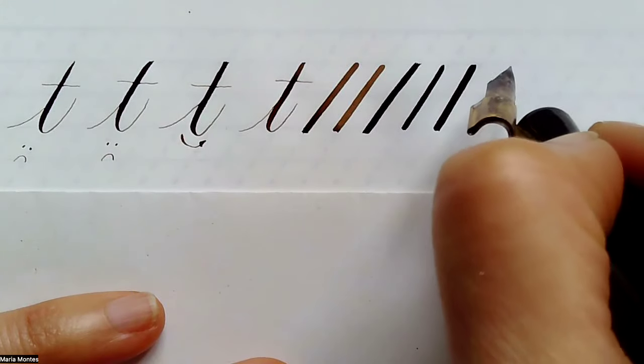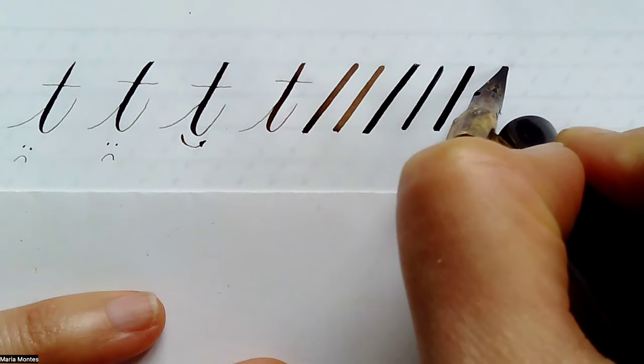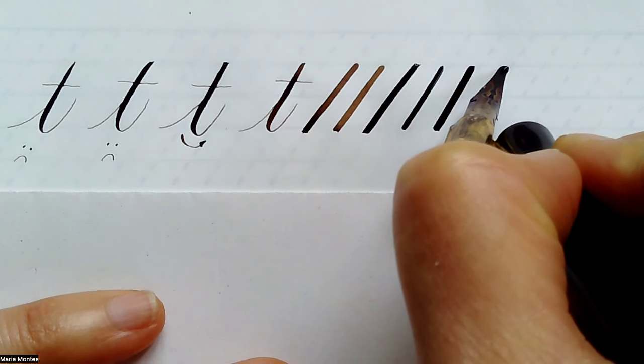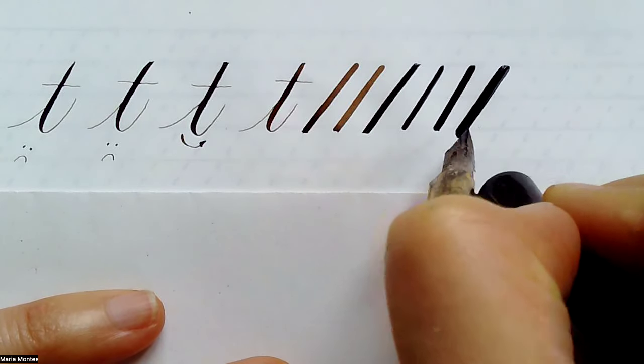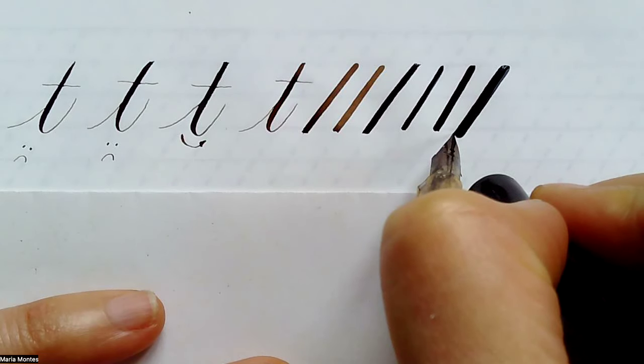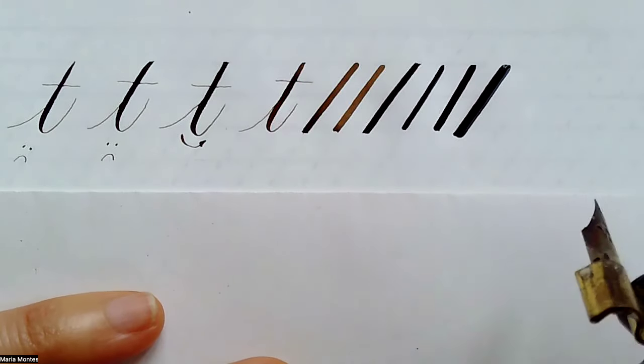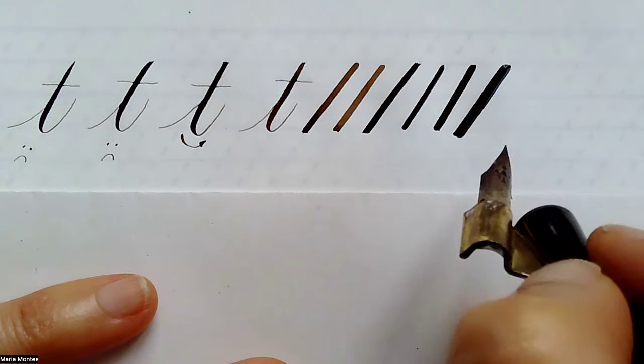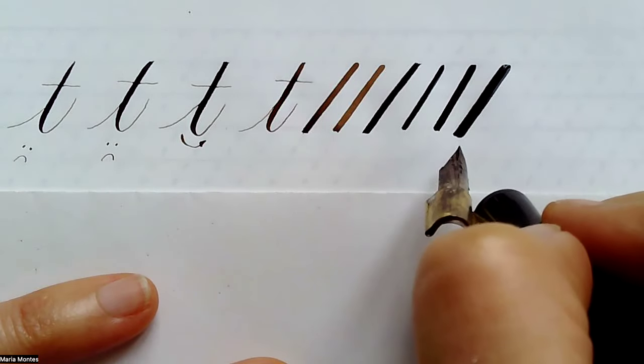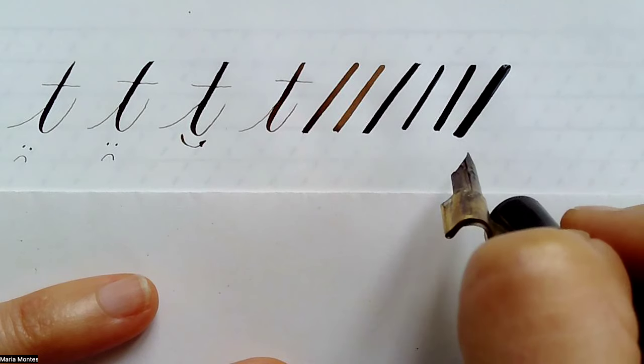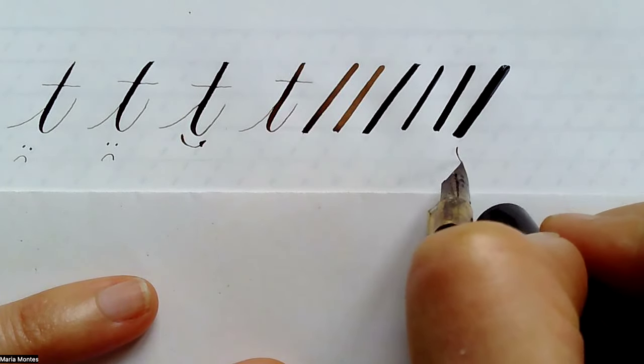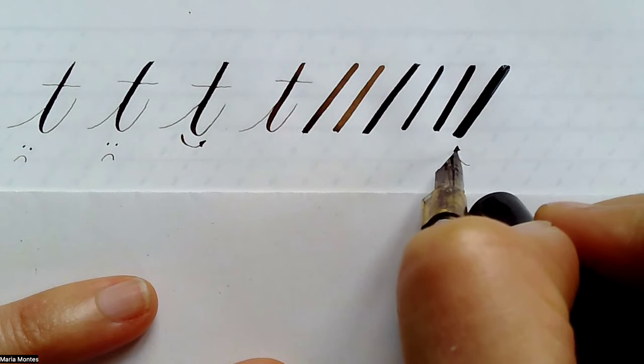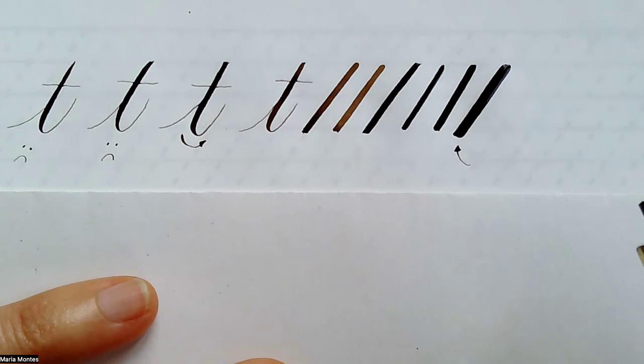Also, you can control a lot better because depending on the nib you are using, you can get thicker strokes. You can try to perform the maximum amount of pressure possible and see how far your nib can take you. Now I am going to look for the maximum capacity and see the incredible amount of ink I am downloading. This is not going to happen with all nibs. This is happening with my nib because it is very flexible. Hunt 101 is going to give you this type of really wide spread.